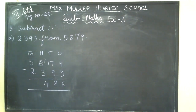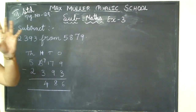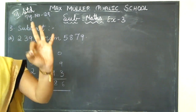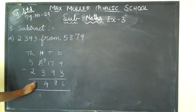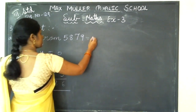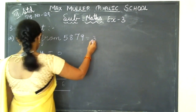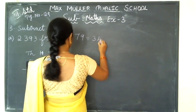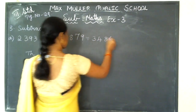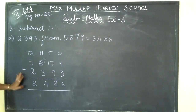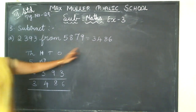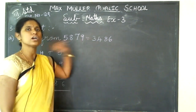Next, in the thousands place: 5 minus 2. From 5 if I minus 2, how much are you getting? 1, 2, 3 — so write 3. The answer is 3,486. This working you are doing in your rough notebook. Only the answer you are writing in your textbook.